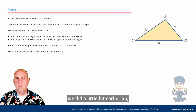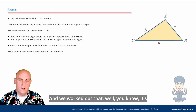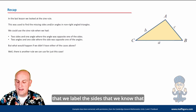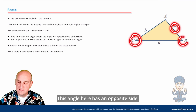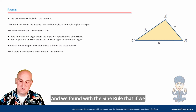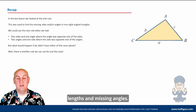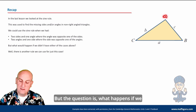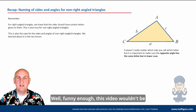In the last video I looked at the sine rule, and we worked out that it's important to label sides — every angle has an opposite side. With the sine rule, if we had an angle and an opposite side we could find missing side lengths and missing angles. But what happens if we don't have an opposite side length and an opposite angle?